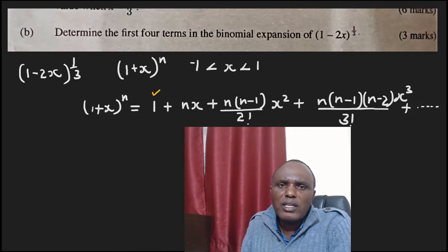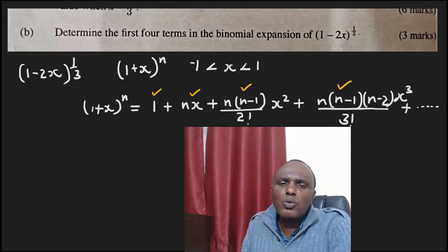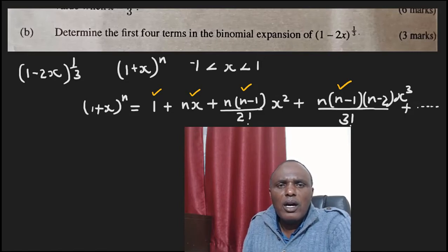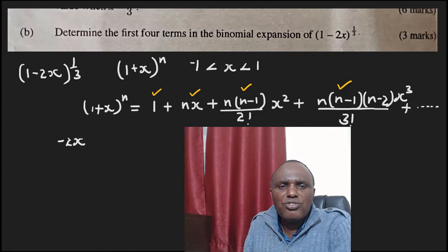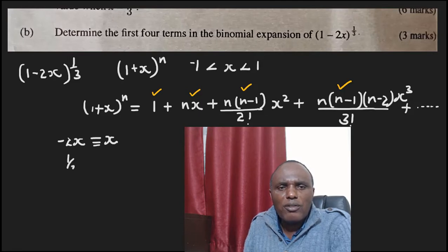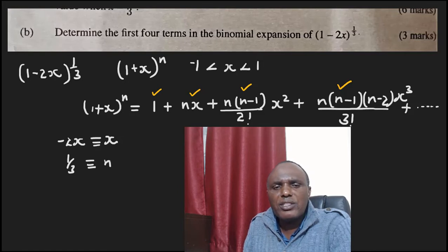In this expansion we have the first term, the second term, the third term, and the fourth term — that is what we are required to find. In our problem, negative 2x is equivalent to x in the general expansion, and 1 over 3 is equivalent to n in the general expansion.